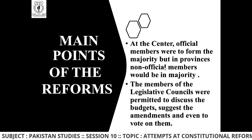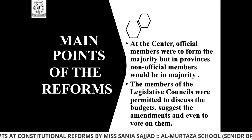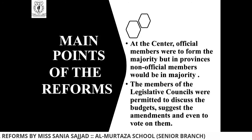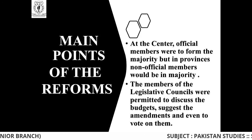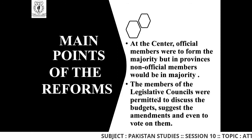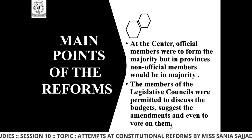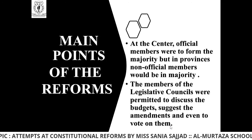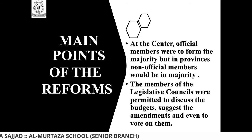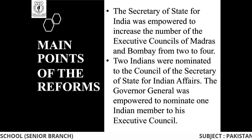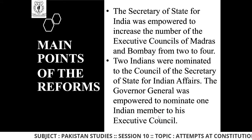At the center, official members were to form the majority, but in provinces, non-official members would be in the majority. The members of the legislative council were permitted to discuss the budget, suggest amendments, and even vote on them — meaning they could put forward suggestions about what could be done to improve government policies. Amendments means making changes to budget policies.